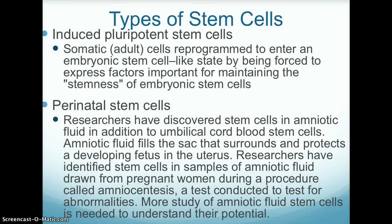Induced pluripotent stem cells are somatic or adult cells reprogrammed to enter an embryonic stem cell-like state by being forced to express factors important for maintaining the stemness of embryonic stem cells.